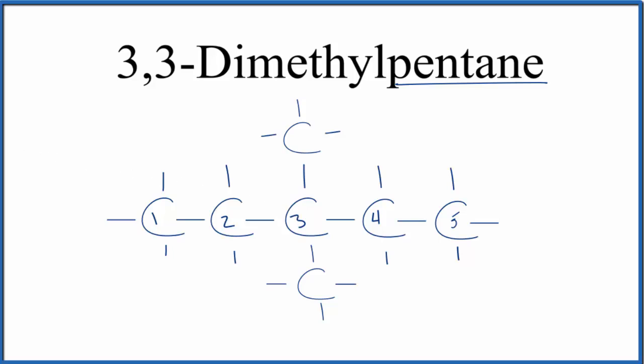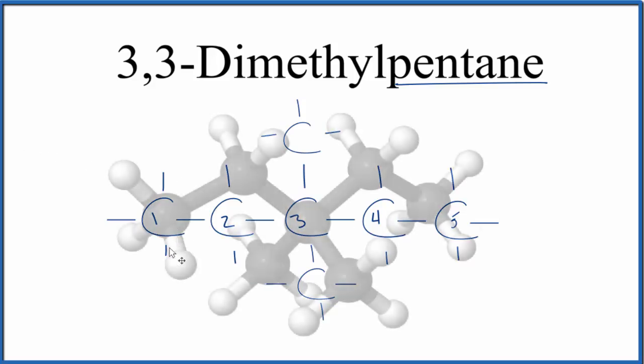We'll look at the molecular model. That'll look like this. The blacks, those are the carbons, whites are hydrogen. We have one, two, three. And on the third one, we have a methyl group right here and right here.